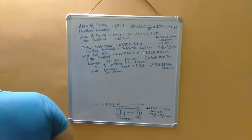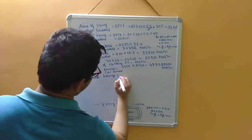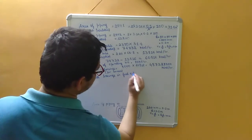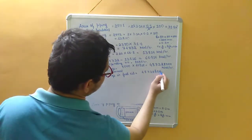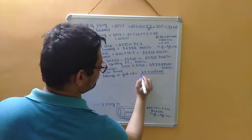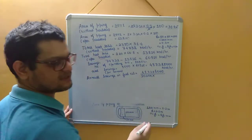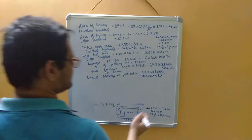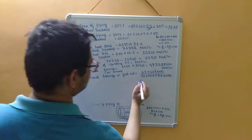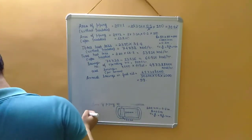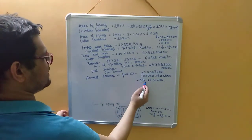The annual savings in fuel oil is calculated as: 487,328,000 divided by (gross calorific value × boiler efficiency × 1000) = 487,328,000 / (10,300 × 0.8 × 1000) ≈ 59.14 tonnes of fuel oil saved per year.